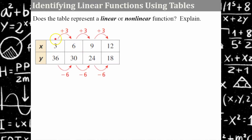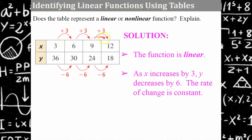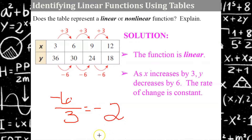We're looking at the rate of change given a table of values. These are quite large values, so let's look at an easier way to determine linearity rather than graphing. I'll look at the rate of change between the x terms and y values. The x values are increasing by 3 every time, and the y values are decreasing by 6 every time. Therefore, this is a linear function because as x increases by 3, y decreases by 6, giving us a constant rate of change. The slope — change in y over change in x — simplifies to negative 2.